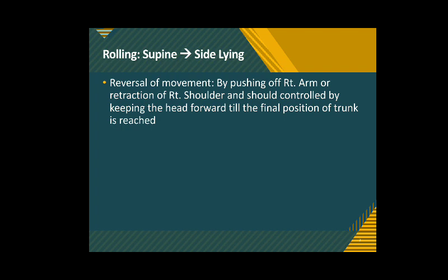To come back to the position of supine from side lying — that is called reversal of movement — the right arm helps the movement by pushing or retraction, and the reversal has to be in a controlled manner. First the lower trunk comes down, then the upper trunk, and last the head and neck. This helps in gradual lowering of the body from side lying, a position of relative instability, back to supine, a position of relative stability.